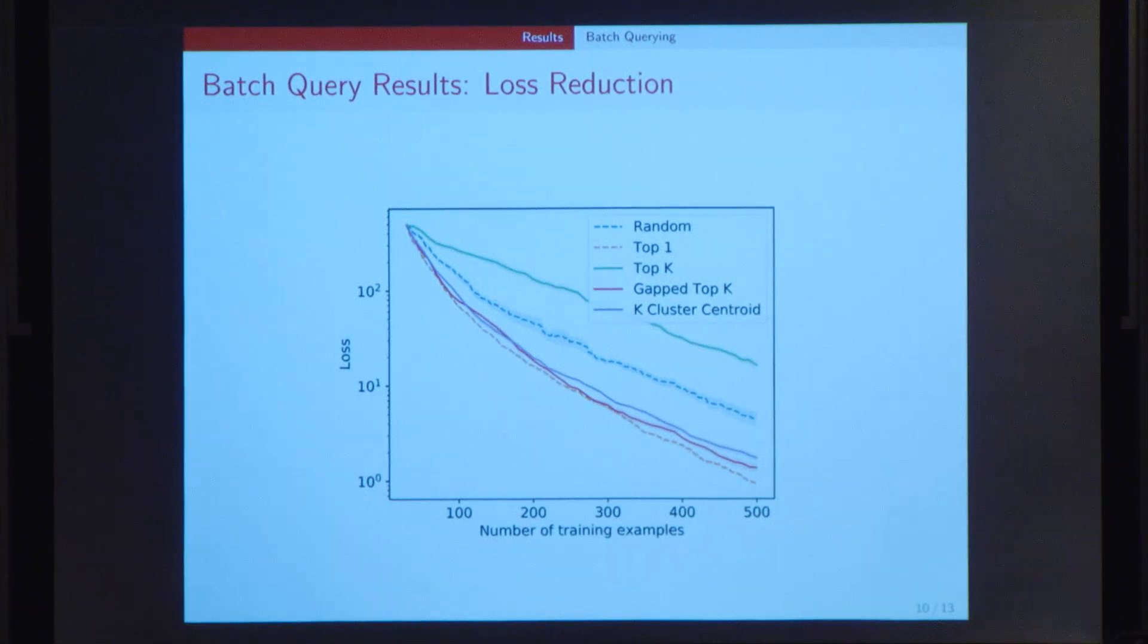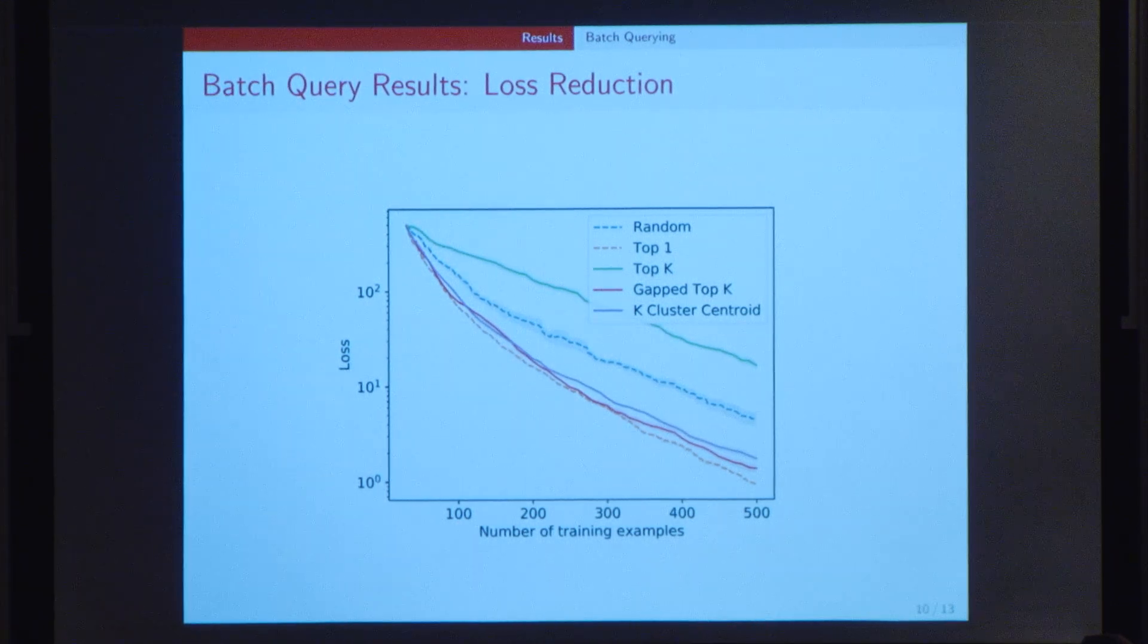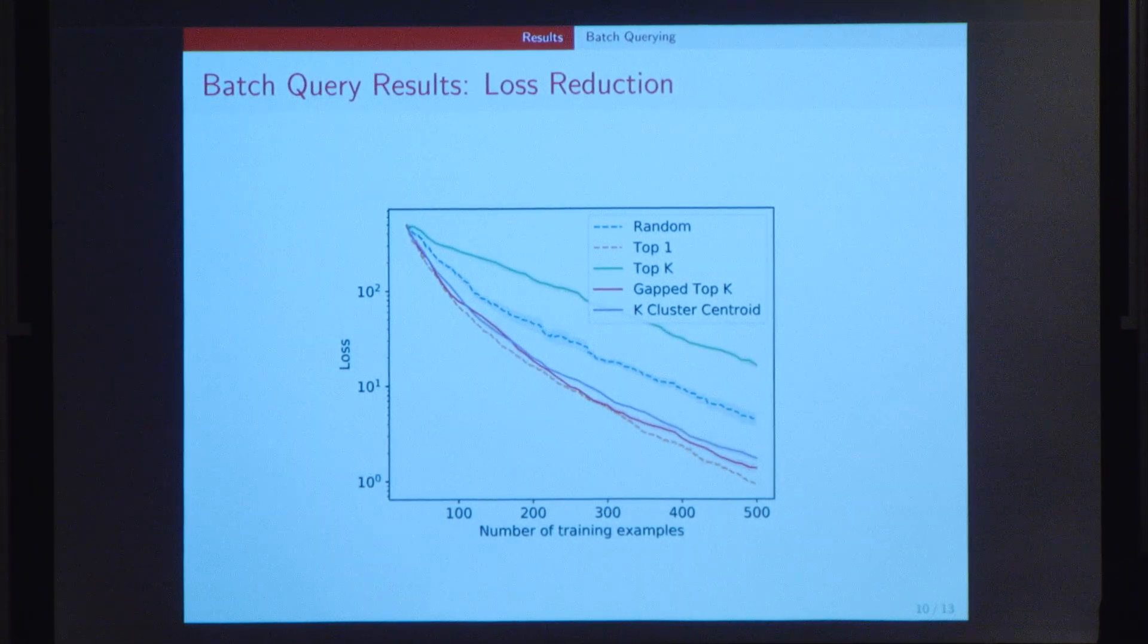Here you can see the results of batch querying. The two dotted lines represent what you saw earlier, the sequential methods of random and uncertainty-based active learning. The first thing that you can notice is that the top-K algorithm performs really poorly compared to even the random method. The main reason for this is because of the lack of diversity. As soon as one data point is queried, the remaining K minus 1 data points that are also queried are likely to be in the same region or the same cluster as the first data point. And so they don't add much new information to the batch querying algorithm.